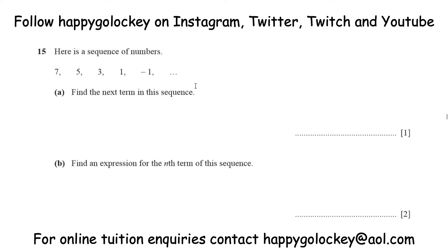So we're looking today at IGCSE paper 2, 2020 specimen paper. I kind of bypassed this question — I didn't mean to. I looked at it and thought we've already had that question on paper 1, but this is slightly different. It's still about sequences but this time it's not a quadratic sequence like it was on paper 1; it's actually an easier type of question — it's a linear sequence. The question goes: here is a sequence of numbers 7, 5, 3, 1, minus 1. Part a: find the next term in the sequence. Part b: find an expression for the nth term of this sequence. Press pause and I'll be back with the worked solutions.